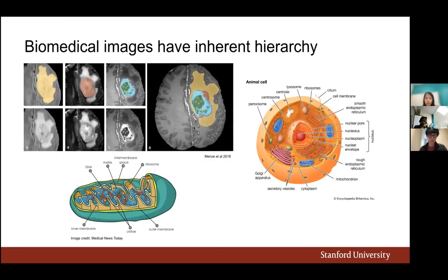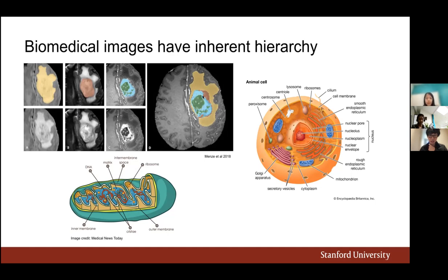Here are examples that inspire us. On the right is a cell with substructures that have even smaller substructures inside them. Here's a mitochondria example, and here's an example from the brain tumor segmentation dataset we evaluate on, which also looks quite hierarchical — there's a large yellow region that may include smaller regions, and even smaller regions inside.